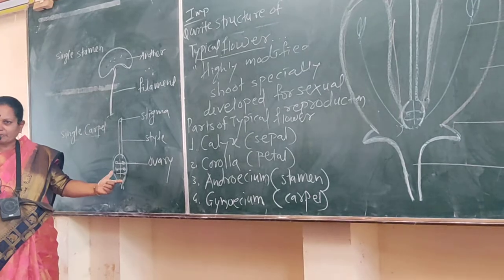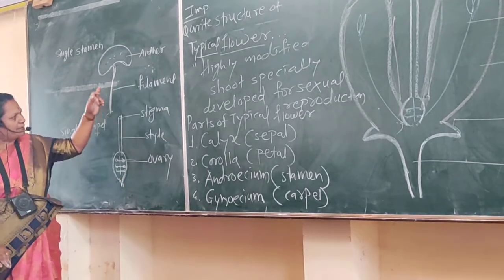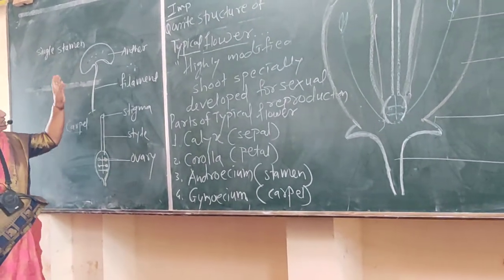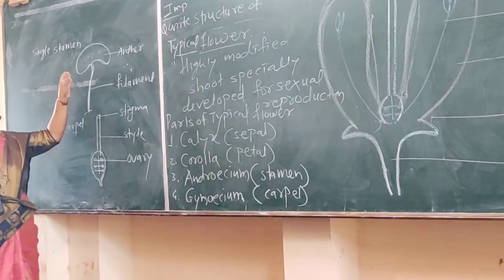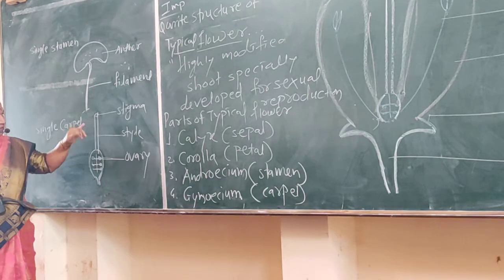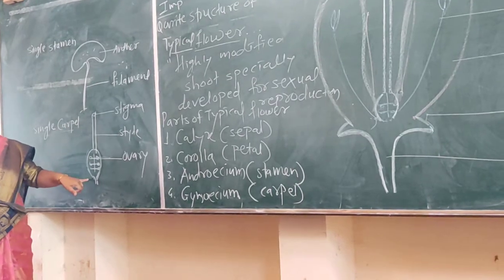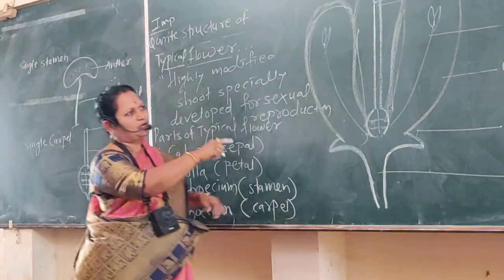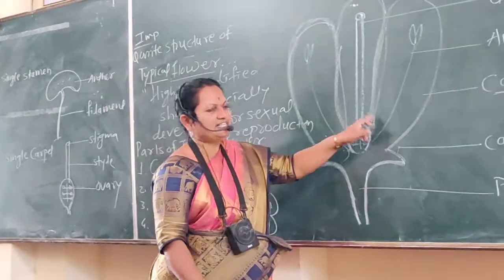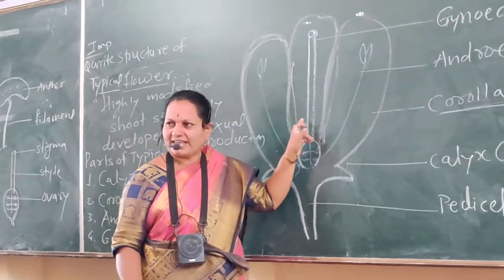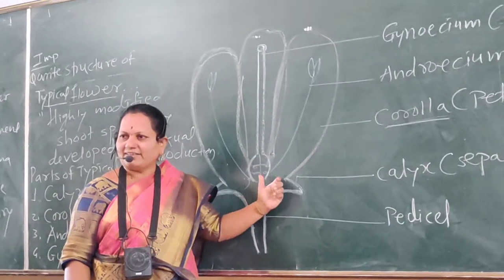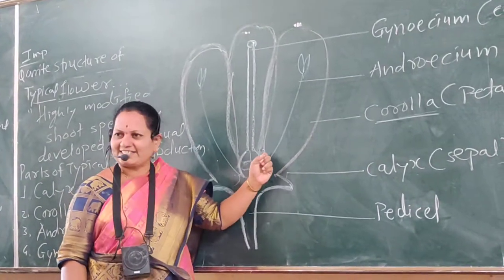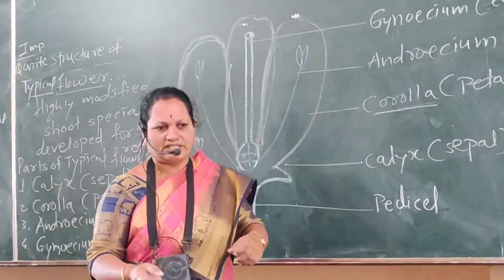The carpel is the female reproductive structure and the stamen is the male reproductive structure. Calyx and corolla are called accessory whorls.